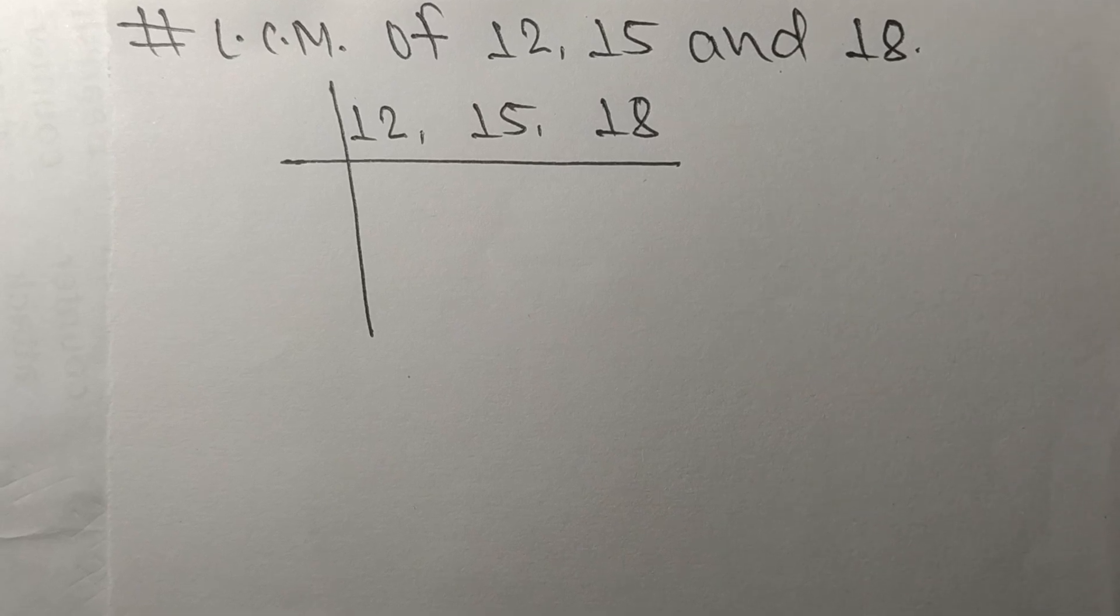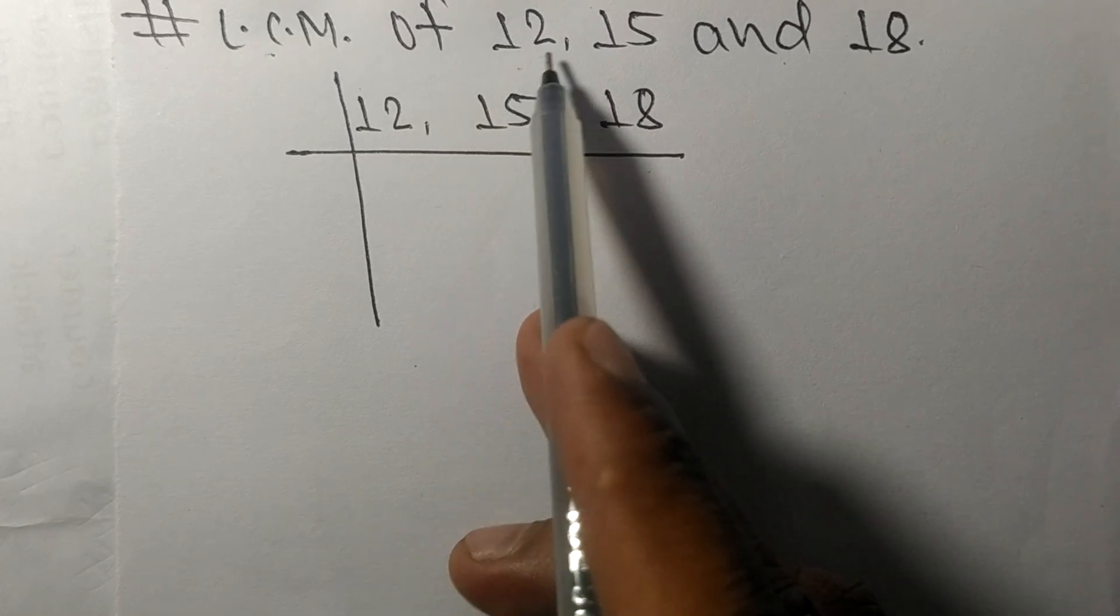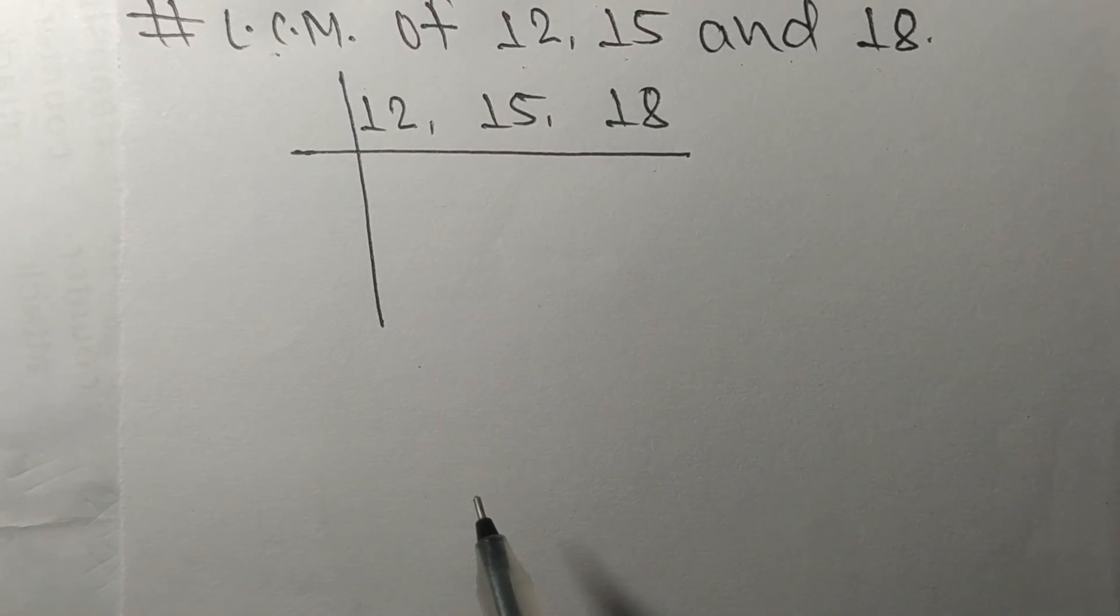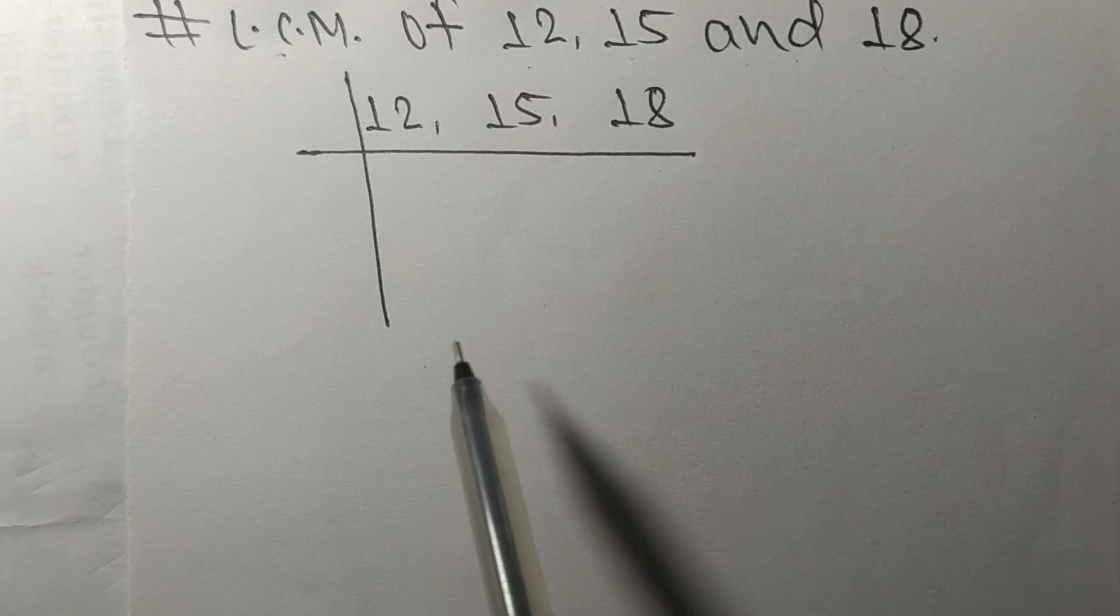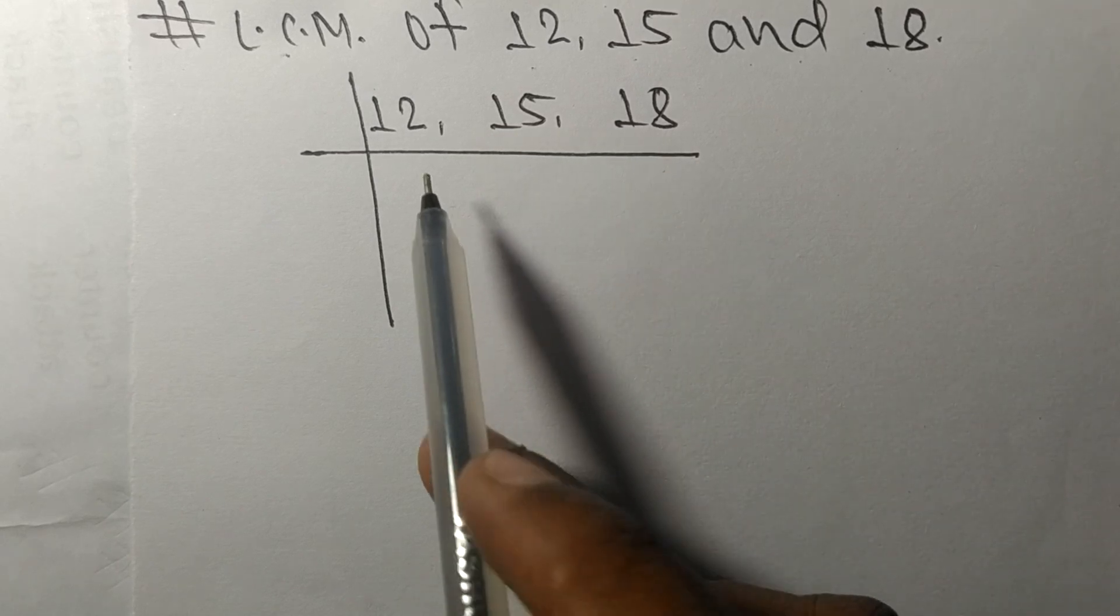Today in this video we shall learn to find the LCM of 12, 15, and 18. To find the LCM, we have to choose the lowest number that can exactly divide at least any two of these numbers.